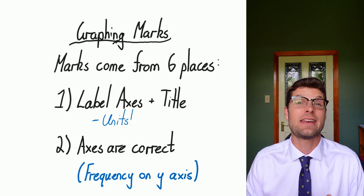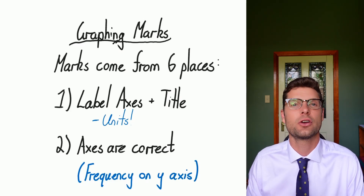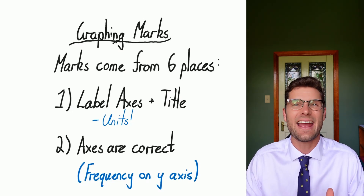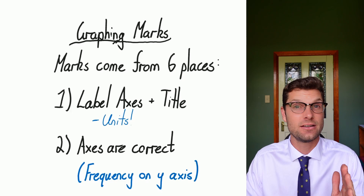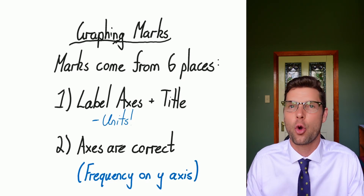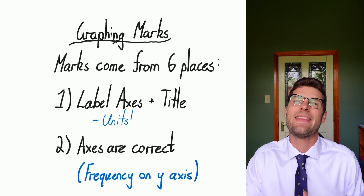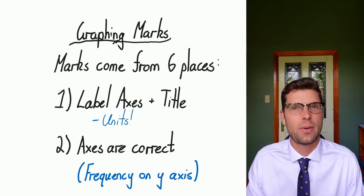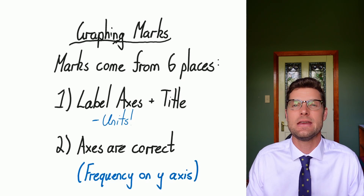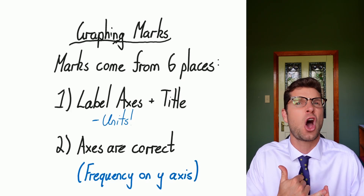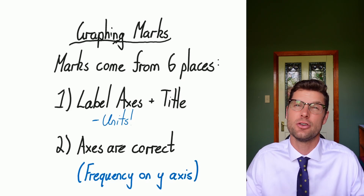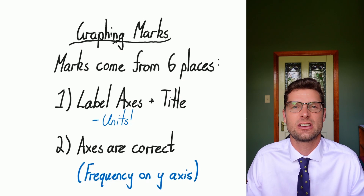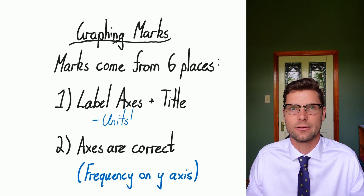The next thing is that we need the correct variable on the correct axis. The y-axis is the dependent variable — it's usually what we are recording. The x-axis is the independent variable, and that's what we're manipulating. So time usually goes at the bottom because you're manipulating how long your experiment's going.